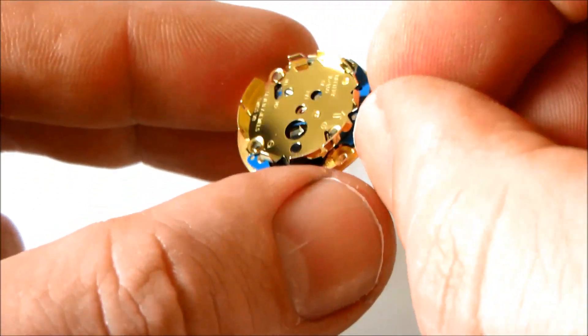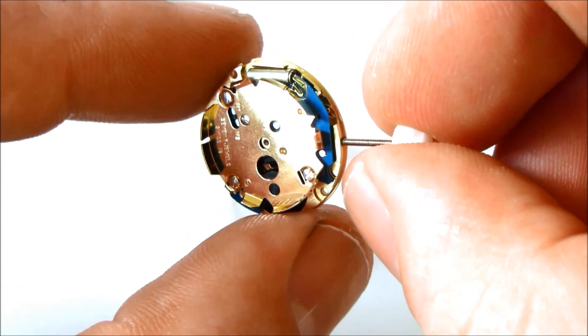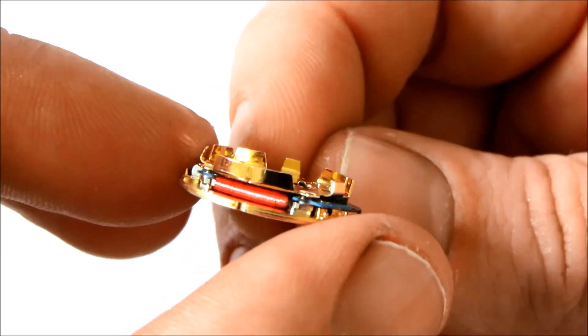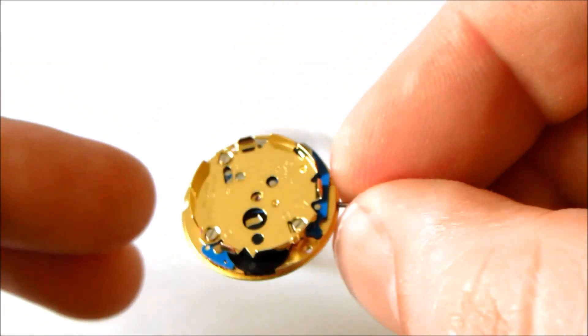It's an eight and three quarter line diameter movement which is 19.4 millimeters. ETA specifications say this is 2.5 millimeters high but that doesn't include the battery, so in reality it's actually over 4.5 millimeters high.